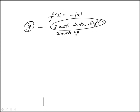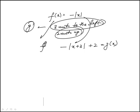Three units to the left would make—I should write the intermediate—would be x plus three, and then two units up would add two. So this would be g of x.